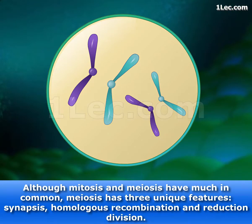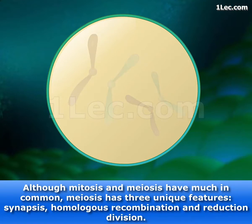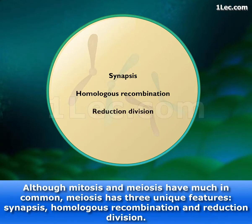Although mitosis and meiosis have much in common, meiosis has three unique features: synapsis, homologous recombination, and reduction division.